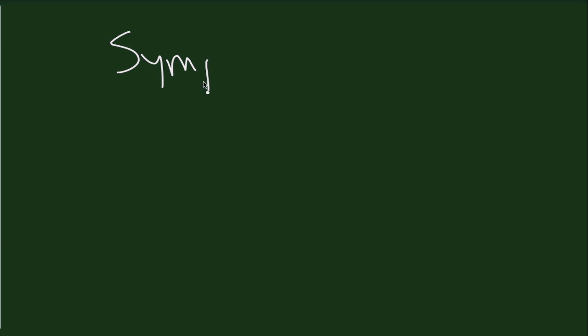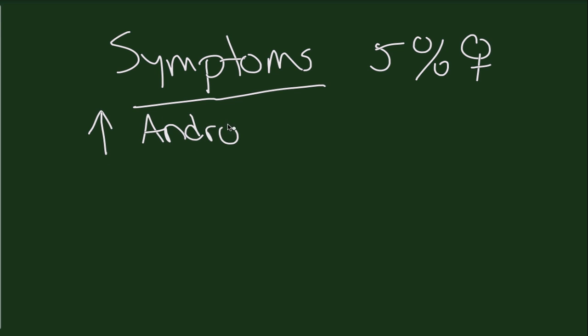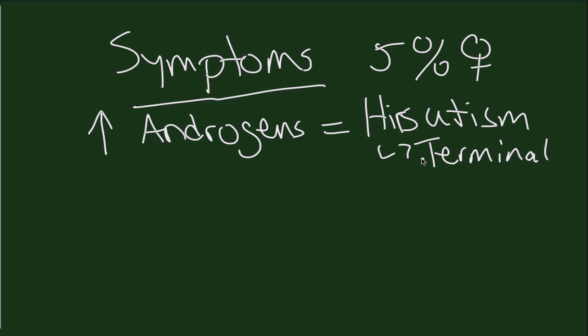So what are the common symptoms that we see with PCOS? Remember that approximately 5% of the female population will have PCOS. As we mentioned before, there are increased androgens. What you see in the patient with increased androgens is typically something called hirsutism, which is male type hair growth or darkened terminal hair growth that women sometimes complain of on their upper lip or chin that they need to shave. Another common symptom that you see is obesity. Obesity affects about 50 to 60% of patients with PCOS, which in turn leads to other symptoms.